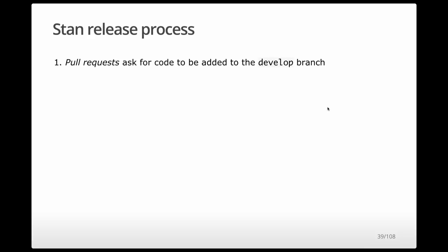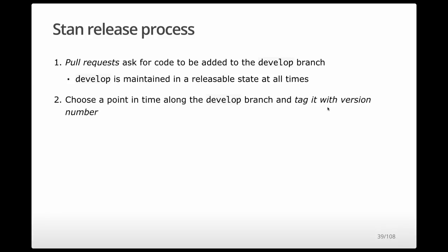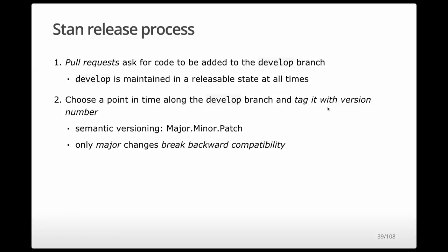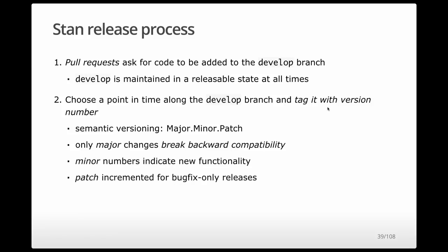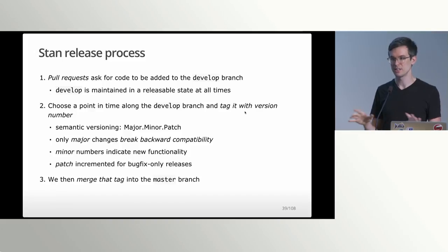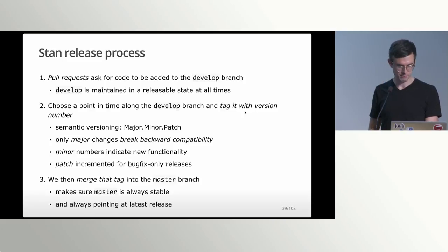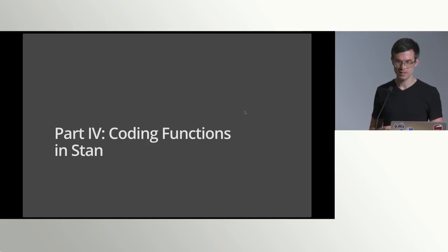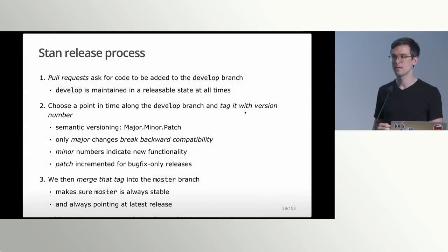So how do we actually release Stan? We want it to be stable at all times, hence the Jenkins and continuous integration steps. At some point we'll say it's time to release Stan 2.19, choose some commit in develop, tag it with a version number — major.minor.patch. Only major stuff breaks backward compatibility. Then we'll merge that tag into the master branch, which will always point to the most recent release of Stan.